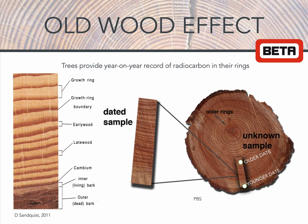When a tree is growing, it's constantly exchanging carbon with the atmosphere. When trees take up radiocarbon, they utilize this carbon for growth through the development of their annual tree rings. Each tree ring traps the radiocarbon signature during that year of growth, and these rings stop exchanging carbon with the biosphere once they're laid down. As a result, trees provide a year-on-year record of radiocarbon in their ring structure.